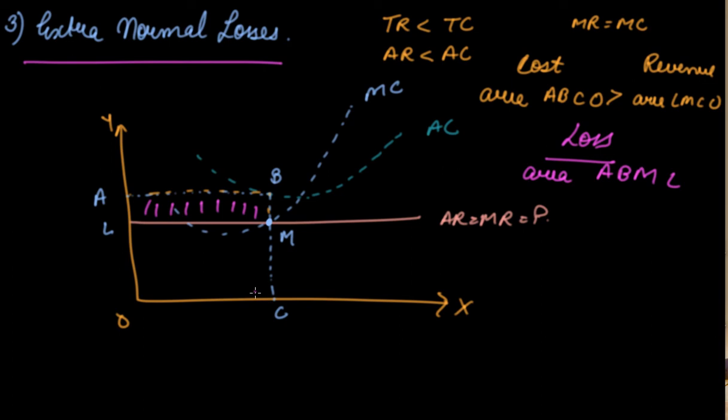So in the short period there are three situations of producer's equilibrium: number one is normal profit, number two is extra normal profit, and number three is extra normal losses. I hope you liked the video.